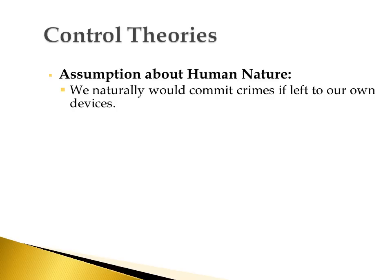Each time we learn about a new theory of crime, there's often going to be a different assumption that theory makes about human nature. Each of the theories approaches our natural drives and motivations from a slightly different perspective. Control theory's assumption about human nature is that humans, if left to our own devices, would naturally commit crime. If we weren't controlled by societal forces, family influences and pressures, or any of the informal or formal types of control we experience in life, we would naturally commit crimes because crimes are the easiest way to get what we want.